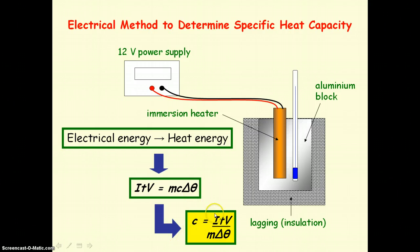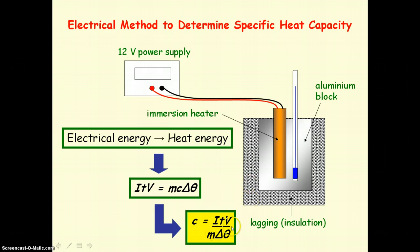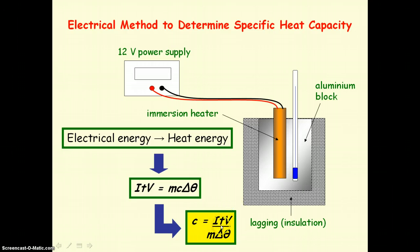To determine C, we need to know the current flowing through the immersion heater — measured with an ammeter — and the voltage across it, measured with a voltmeter connected in parallel. We use a weighing balance to find the mass of the aluminium block, and a thermometer to measure the initial and final temperature, with a stopwatch to record the time T elapsed.